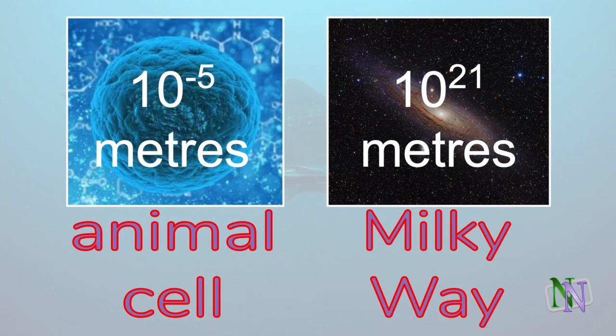Here are two orders of magnitude. A typical animal cell is 10 to the minus 5 meters across, while our galaxy, the Milky Way, is 10 to the 21 meters. One of the advantages of orders of magnitude expressed in powers of 10 is that you can quickly compare two quantities. In this case, a galaxy is 10 to the 26 times larger than a cell.